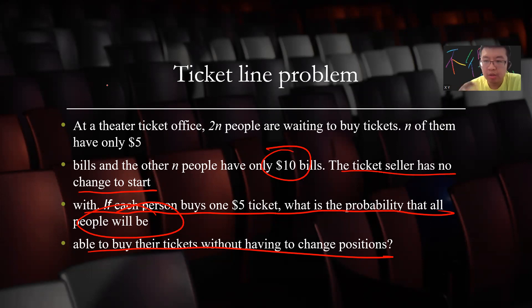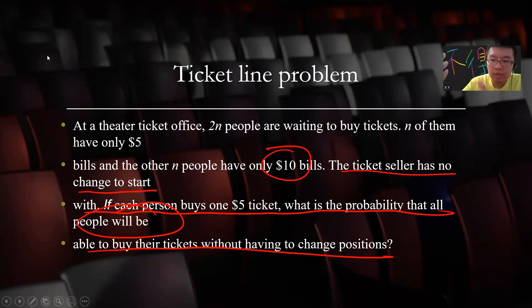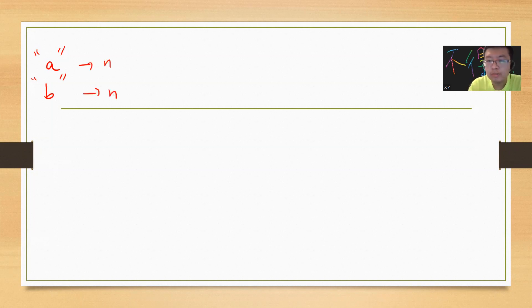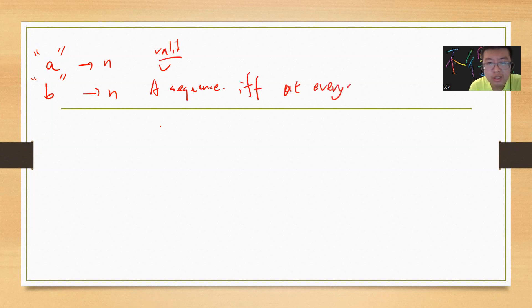The idea basically is that if you only have ten dollars, then there should be some guy who has five dollars before you. So let A be the person with five dollars, and B be the label for the person with ten dollars. We have N A's and N B's, and our goal is to have a valid sequence — meaning at every step, the number of A's is greater than or equal to the number of B's.